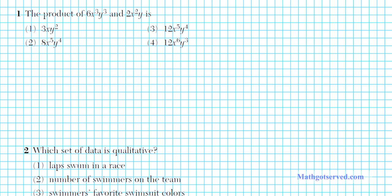Let's take a look at problem number one. The product of 6x³y³ and 2x²y. We're multiplying 6x³y³ by 2x²y. We know how to multiply numbers, so we'll deal with the product of the numbers first: 6 times 2, that's 12. Then we're going to multiply x³ by x².